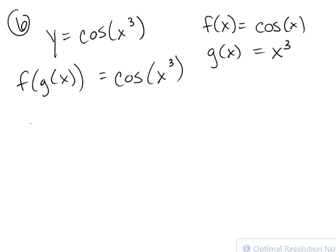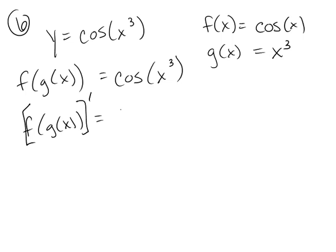And so the formula for the chain rule for the derivative of a composition of functions is equal to the derivative of the outer function in terms of the inner function, times the derivative of the inner function.